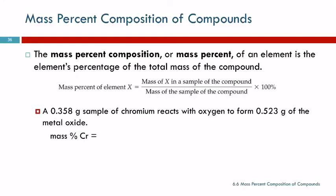Sometimes it's helpful to talk about the mass percent composition of a compound. Mass percent is the mass of an element in a compound divided by the mass of the whole compound times 100.